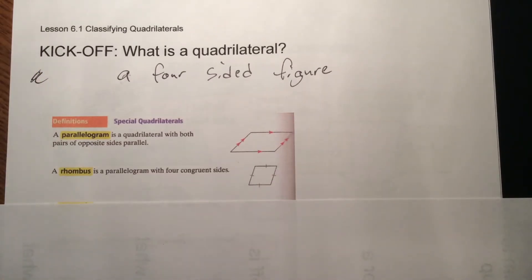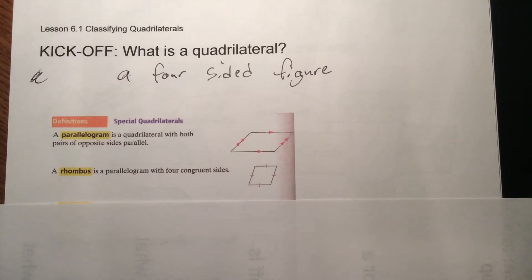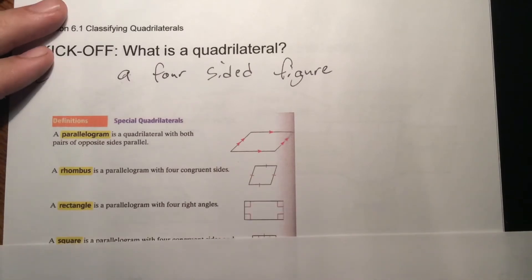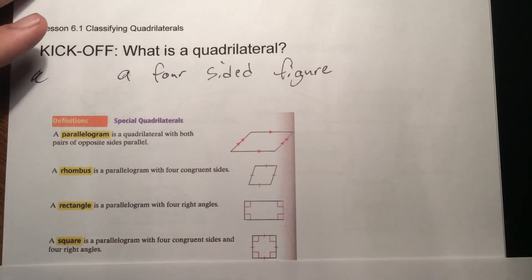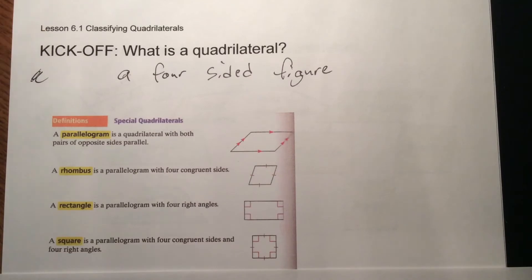A rhombus is a parallelogram, so it has opposite sides parallel, but all sides — not just opposite ones — are congruent; they're all the same length. A rectangle is also a parallelogram with opposite sides parallel, but it has four right angles. A square is a parallelogram with four congruent sides and four right angles.